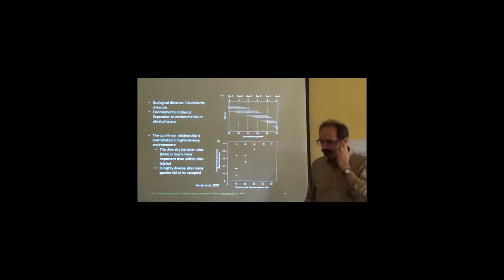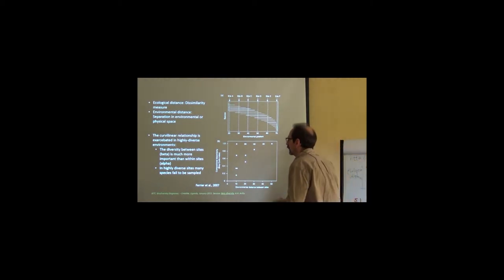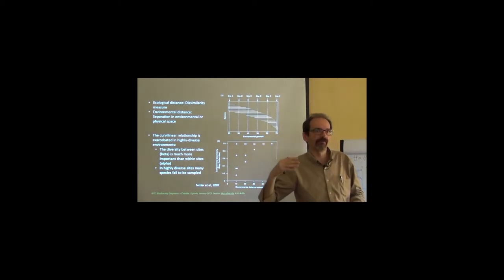So we have this curvilinear relationship that is not even constant. I mean, it depends on how the sites are and how the samples are. So for you specifically, the problem is that this curvilinear relationship is even greater when there is a lot of rare species in highly diverse systems.